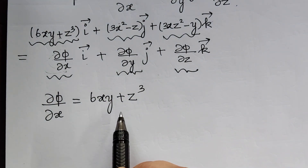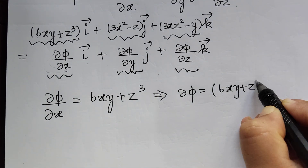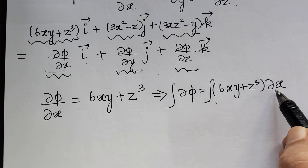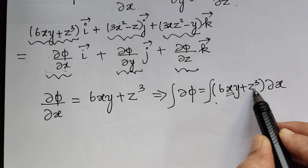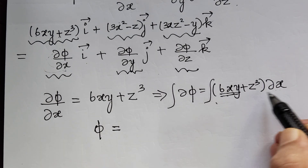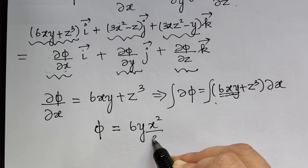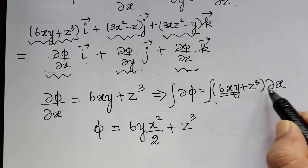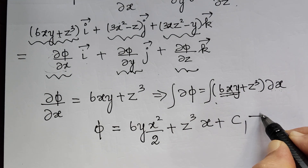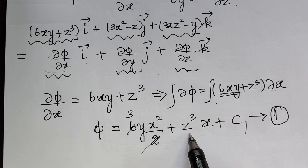From ∂φ/∂x = 6xy + z³, we write dφ = (6xy + z³) dx. Integrating on both sides partially with respect to x, all others treated as constants: φ = 6y · x²/2 + z³ · x + c₁, which simplifies to φ = 3x²y + xz³ + c₁. Let us mark this as equation 1.